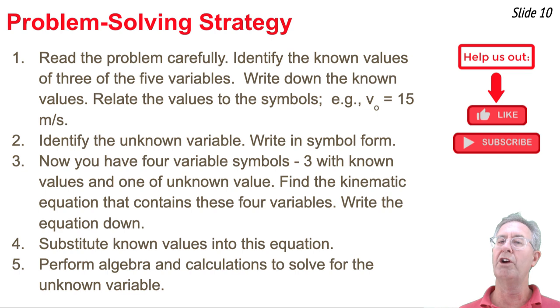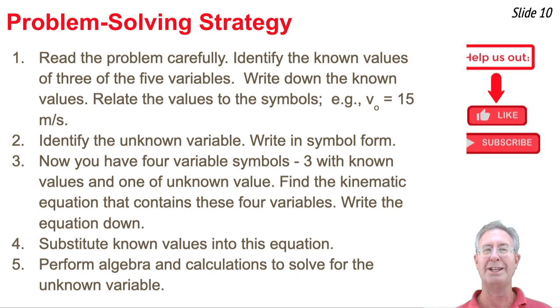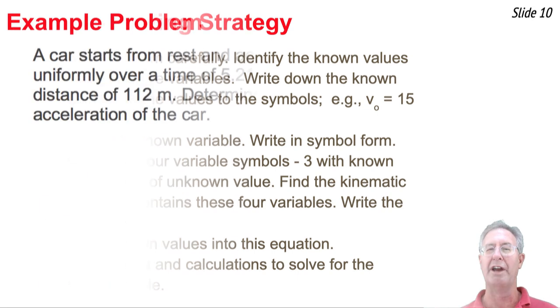Now that you have four variable symbols, three with known values and one with an unknown value, you're going to look through the list of four equations and find the one equation that contains these four variables. Once you've found it, write it down. Then you're going to substitute the known values into this equation, and you're going to use some algebra and calculations to solve for the unknown variable value. Sounds easy, doesn't it? Well, let's give it a try.